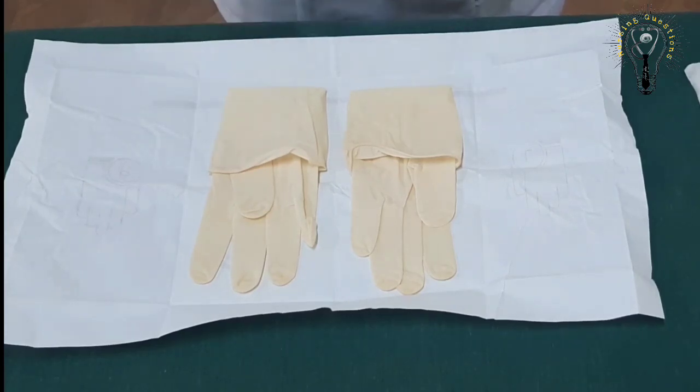Glove your dominant hand first. My dominant hand is my right hand, so I will glove it first. With thumb and your first two fingers of your non-dominant hand, touch only the glove's inner surface. You will touch the dominant hand glove with your non-dominant hand.